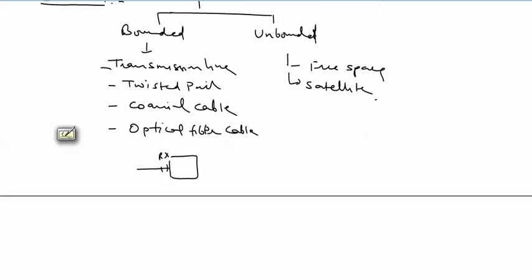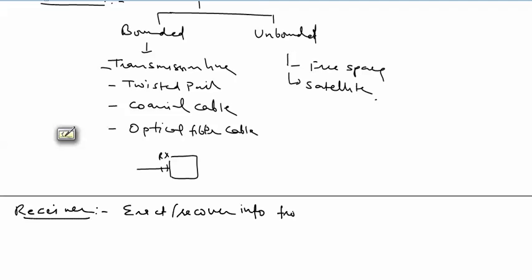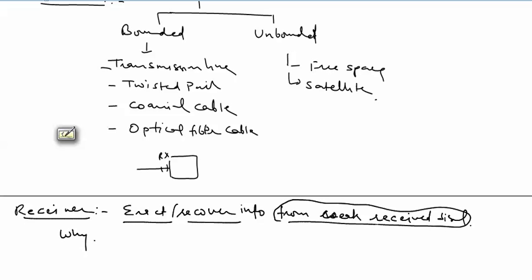Next we discuss the last block — the receiver block. The receiver extracts or recovers information from the received weak signal. Modulation is required because the receiver is recollecting information from whatever received signal it gets. The received signal is weak in power — that is why modulation is required.